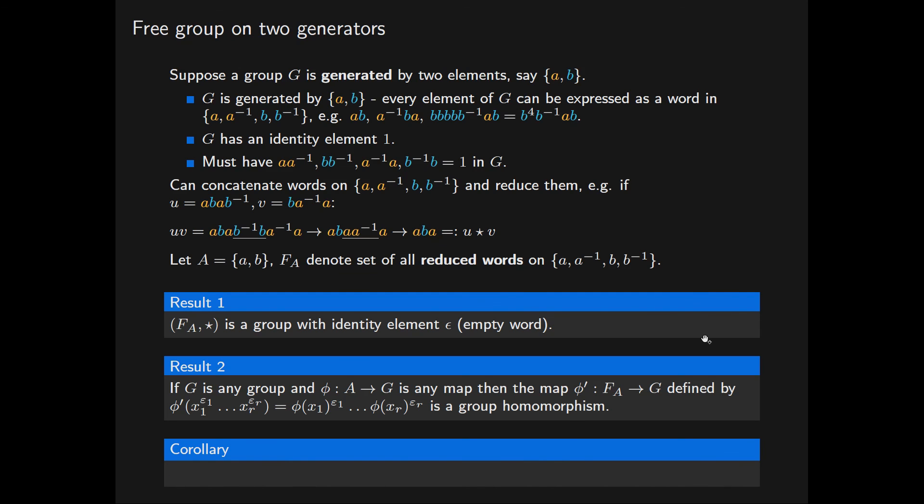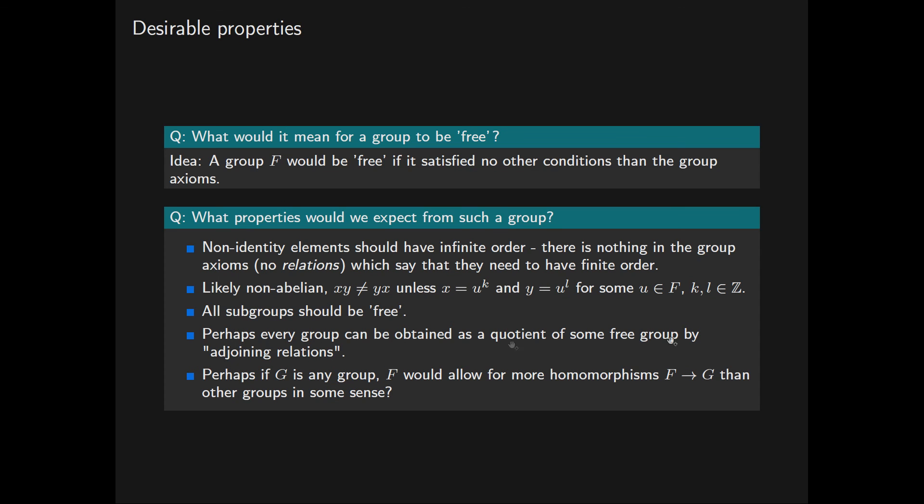And if we go all the way back and remind ourselves of what properties we would expect from a free group, we've shown that these two at the bottom here seem to be satisfied by the group F(A) that we just constructed. In the next part, we will formally define a free group and show that any set gives rise to a free group.